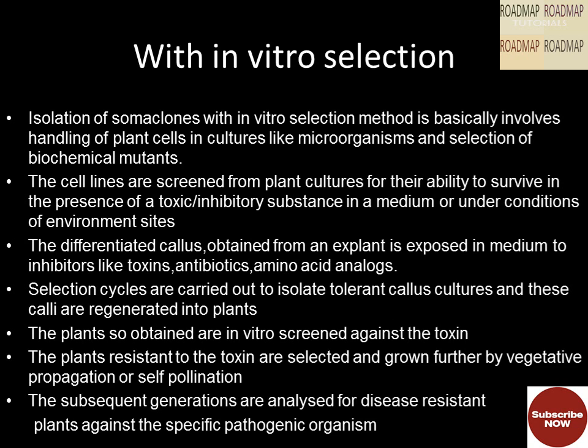The with in vitro selection method involves handling plant cells in cultures like microorganisms and selection of biochemical mutants. Cell lines are screened from plant cultures for their ability to survive in the presence of a toxic or inhibitory substance in a medium or under controlled environmental conditions. The differentiated callus obtained from an explant is exposed in medium to inhibitors like toxins, antibiotics, and amino acid analogues. Selection cycles are carried out to isolate tolerant callus cultures, and these calluses are regenerated into plants. Plants resistant to the toxin are selected and grown further by vegetative propagation or self-pollination.